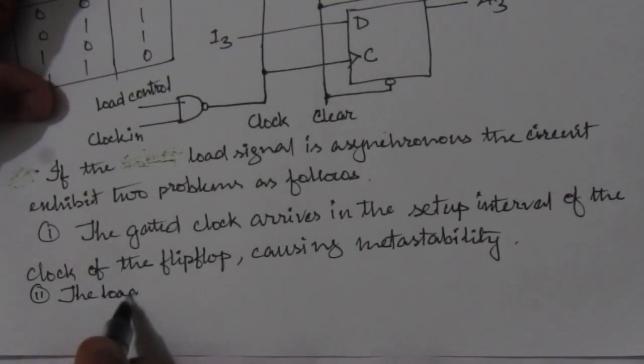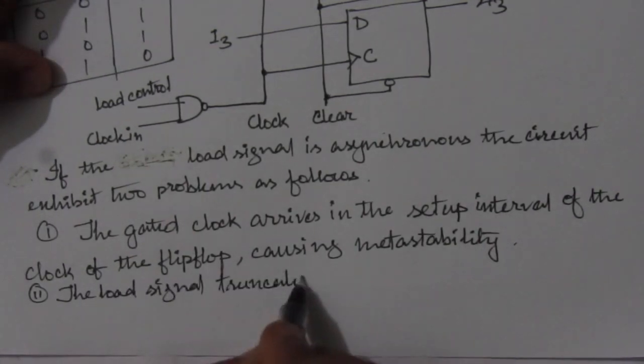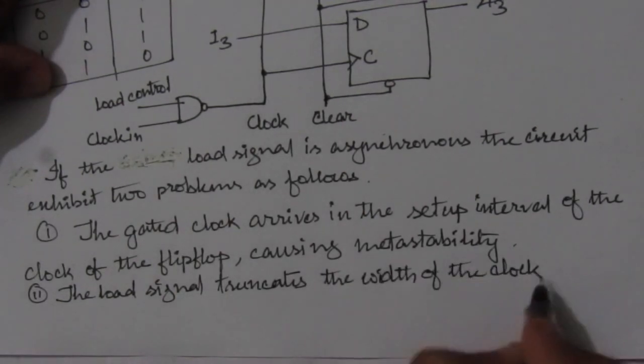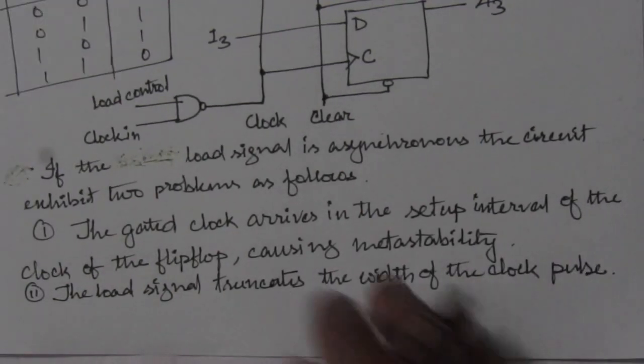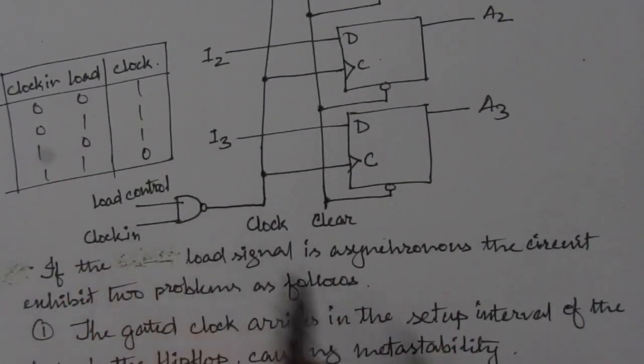the load signal truncates the width of the clock pulse. That means whenever we will have this load signal, this will truncate the width of the clock pulse. That means whenever we will have,